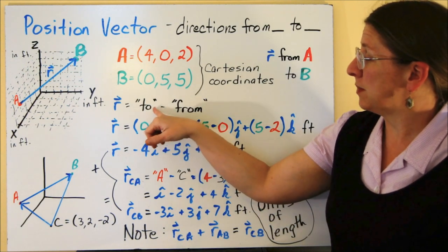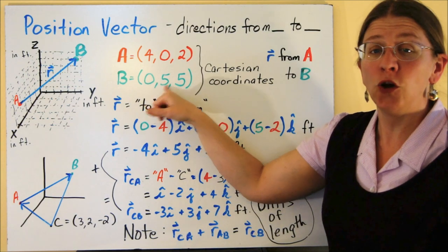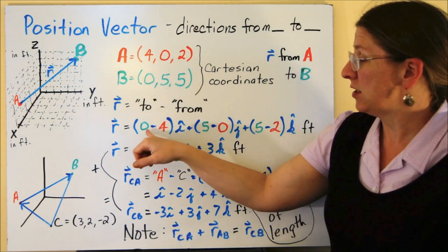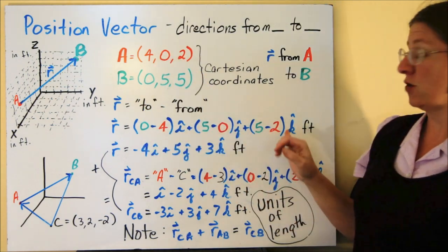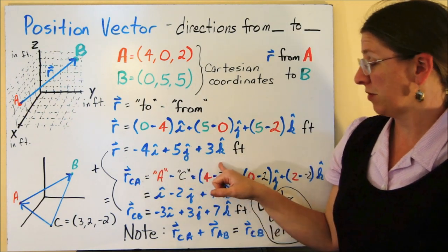So I want to subtract the from Cartesian coordinate from the to, to minus from. 0 minus 4, 5 minus 0, 5 minus 2, this is how you get the position vector. So your position vector is minus 4i plus 5j plus 3k.